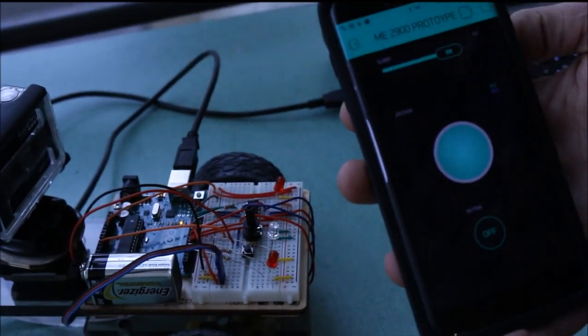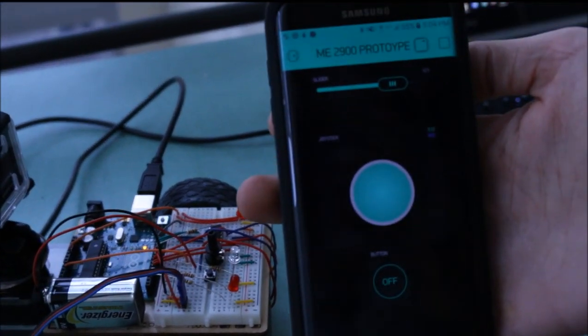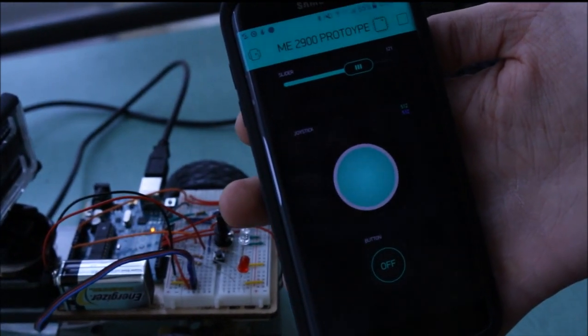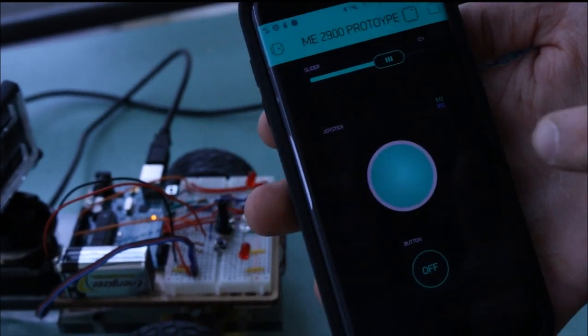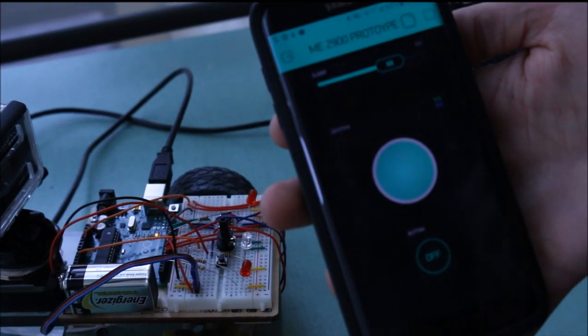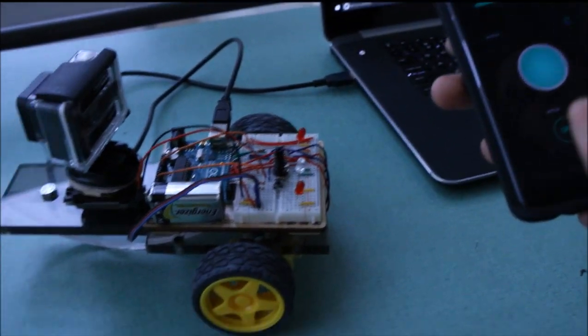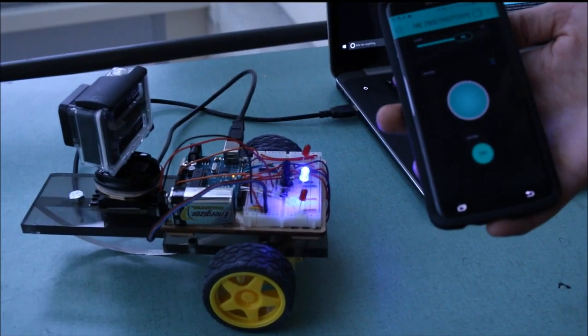The first thing you'll notice is I have my phone, if you're able to see that on there. So this is the Blink app. I've got my ME2900 prototype hooked up. I've got a joystick, a slider to control the motor and then a little button here that turns off an LED. So the first thing I like to do is turn on and off the button.